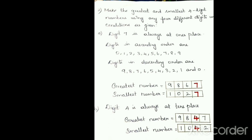Similarly, the next sum: digit 4 is always at the 10's place. So the 10's place digit is 4. The greatest number formed is 9,847 and the smallest number formed is 1,042.